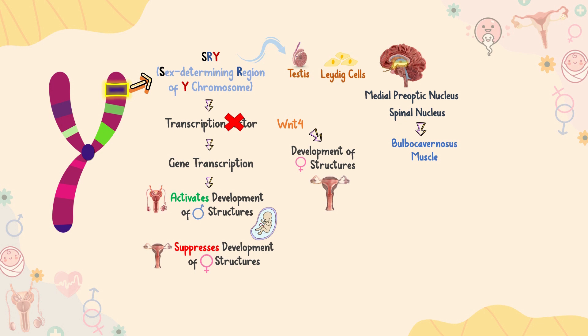There is a marked growth in the sexually dimorphic nucleus of the medial preoptic area of the hypothalamus, and the spinal nucleus that controls the bulbocavernosis muscle. This one, highlighted in green, is the bulbocavernosis muscle, which is actually involved in ejaculation.